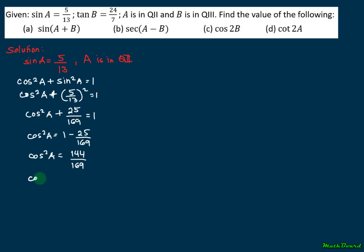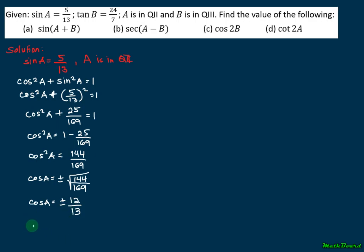Therefore, cosine A is equal to plus or minus the square root of 144 over 169, which simplifies to plus or minus 12 over 13. Since angle A is in the second quadrant, cosine is negative and sine is positive, so we take the negative value. Therefore, cosine A is equal to negative 12 over 13.